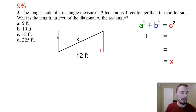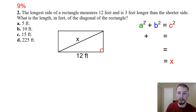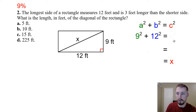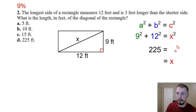Number two — only one person missed this one. The longest side of a rectangle measures 12 feet and is 3 feet longer than the shorter side, so the shorter side is 9 feet. The diagonal is the hypotenuse of a right triangle. So: 9² + 12² = x². Put that in the calculator: 81 + 144 = 225 = x². Take the square root of both sides: √225 = 15. The hypotenuse — the diagonal — is 15 feet.